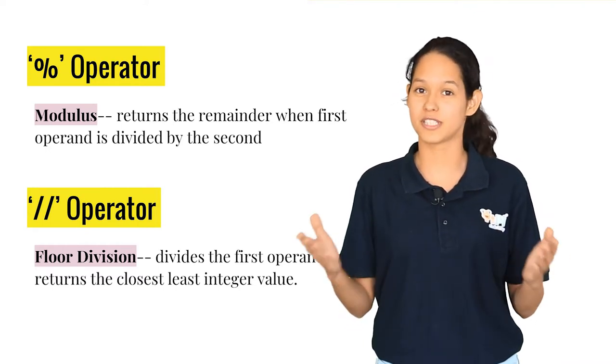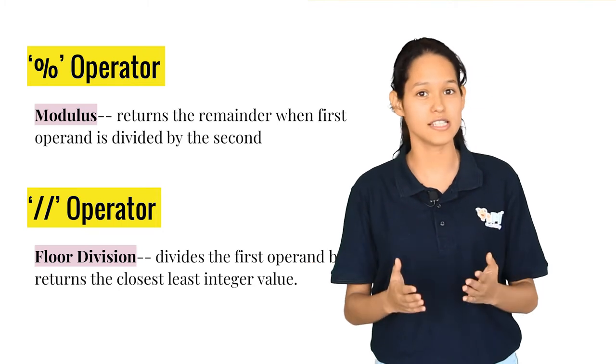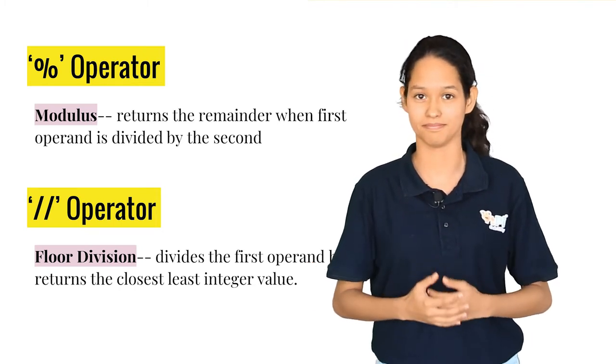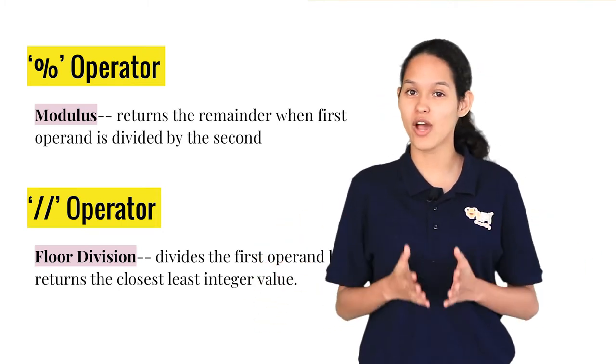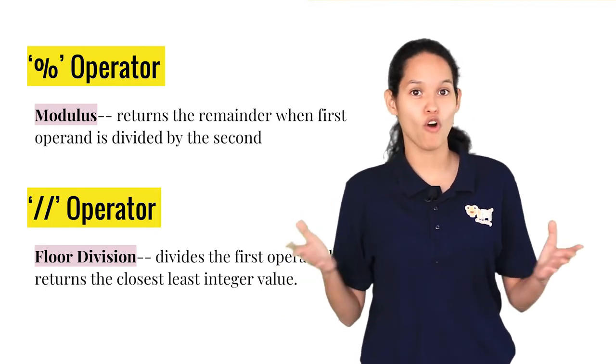The floor division operator performs division and returns the closest least integer value. For floor division, the symbol that you have to use is two forward slashes.